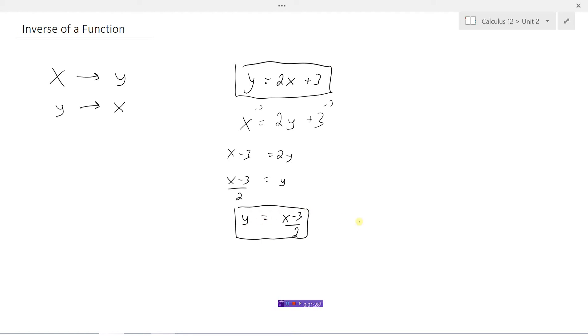Sometimes to show that we're finding the inverse, we express it like this: f inverse of x equals x minus 3 over 2. So this little negative 1 up here doesn't mean reciprocal, it means inverse. It means x and y were switched from the original function.